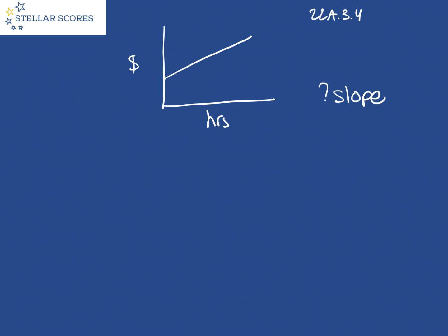Remember slope, another way to write slope is change in Y over change in X. So this is going to be the change in the dollars over the change in the hours. Or another way to think of that is dollars per time.